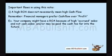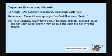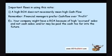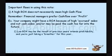For example, your company might have a high ROA because of high accrued sales and not cash sales, or it may be paid the cash too far into the future. Remember, accrued sales means you make a sale and supposedly earn from that sale, but you might not necessarily get the cash from that sale until much later in the future.